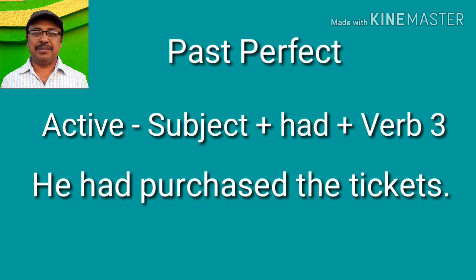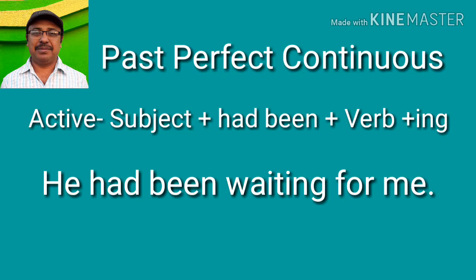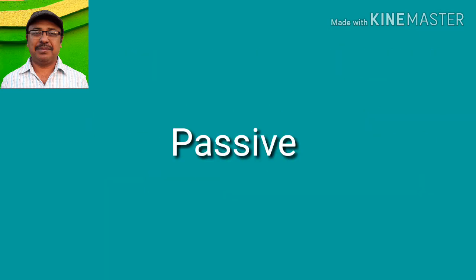He had purchased the tickets before we went to see the film. 'He had been waiting for me' — past perfect continuous means that an action had been going on at or before some point of time in the past. It continued before a certain point of time. He had been waiting before I met him, for a period of time. Though there are no passive forms of perfect continuous.